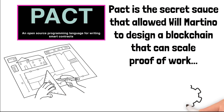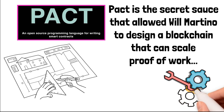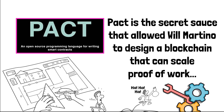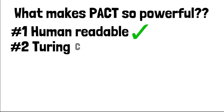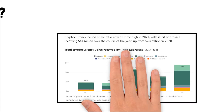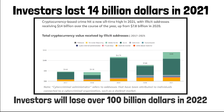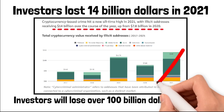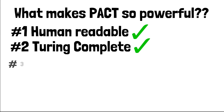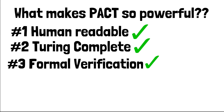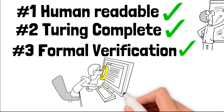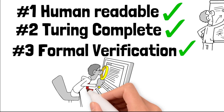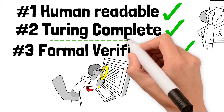Pact is the secret sauce that allowed Will Martino to design a blockchain that could scale proof-of-work. Because every line of code is mission critical in a blockchain with so many moving parts, Pact is the first smart contract coding language that is human readable. Pact is also Turing incomplete — just like Bitcoin. A majority of the $14 billion in hacks from 2021 and $100 billion from 2022 would never have been possible if coded in Pact, because Pact uses formal verification: the Z3 software analyzes every line of code as you write it, looking for ways to break your code.